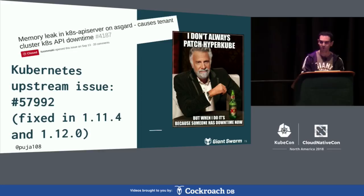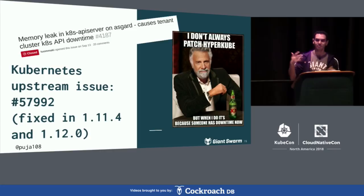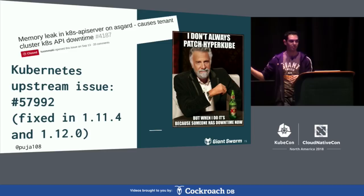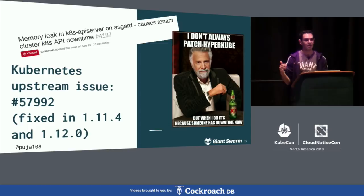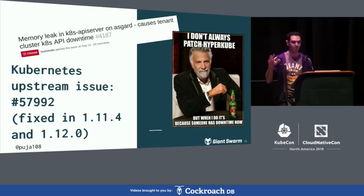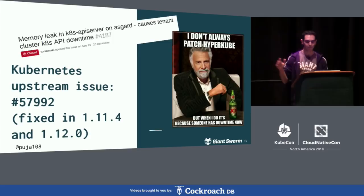Kubernetes 1.11 had a memory leak that was only fixed in 1.11.4. We had it in production since 1.11.1 for some customers. Until the fix landed upstream and could be released, we had to actually patch our own Hypercube image and roll it out to production for some customers. That's something you need to be comfortable with as operators and SREs — sometimes, especially if you're running in production, you need to be ready to get into the code and fix things upstream.